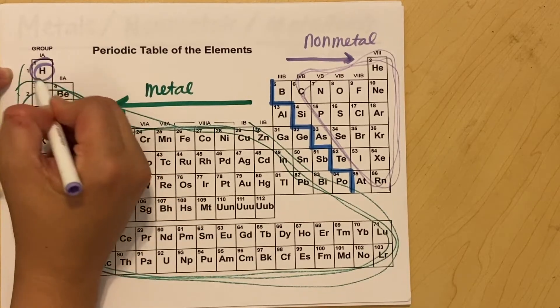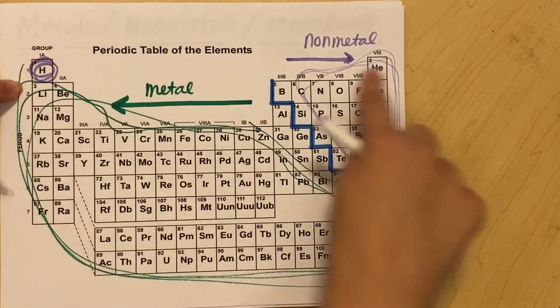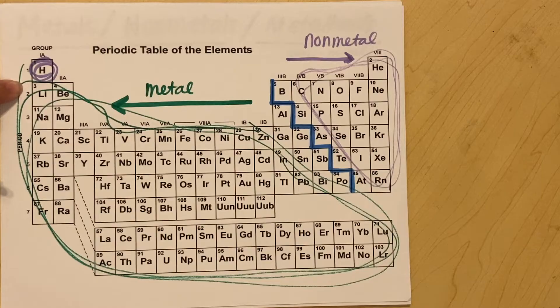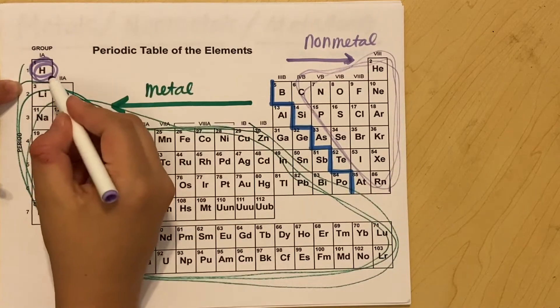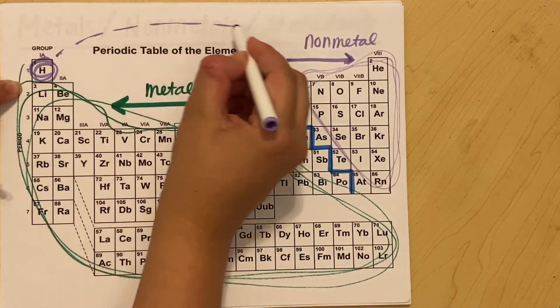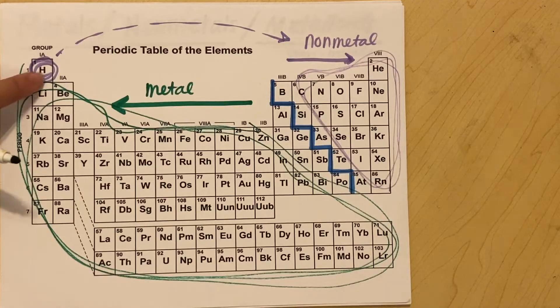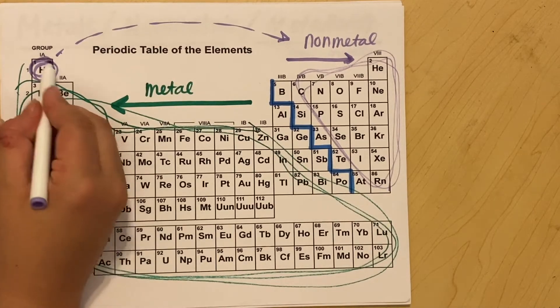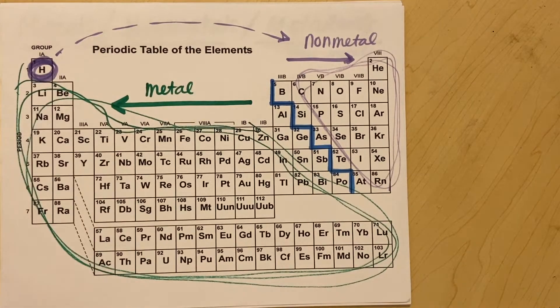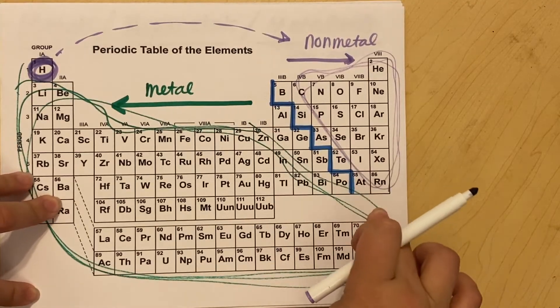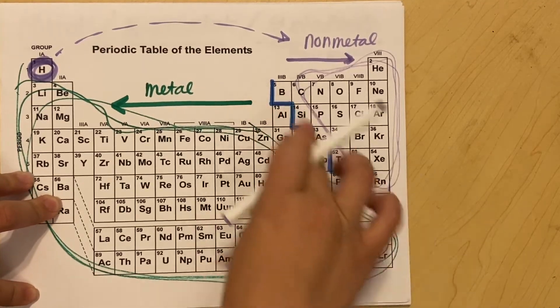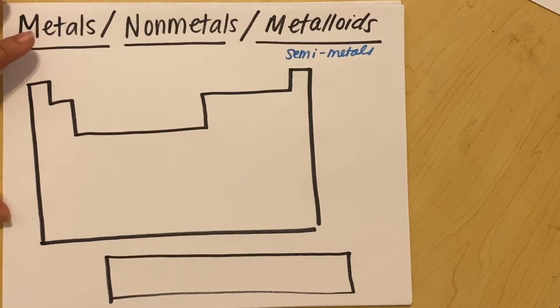Then we have our non-metals over here. This lovely area. Hydrogen is the weirdo. The first period has some weird stuff going on with hydrogen and helium, but hydrogen is a non-metal. Helium technically is in the non-metal category, but he's way over here. So he's the only kind of outlier.